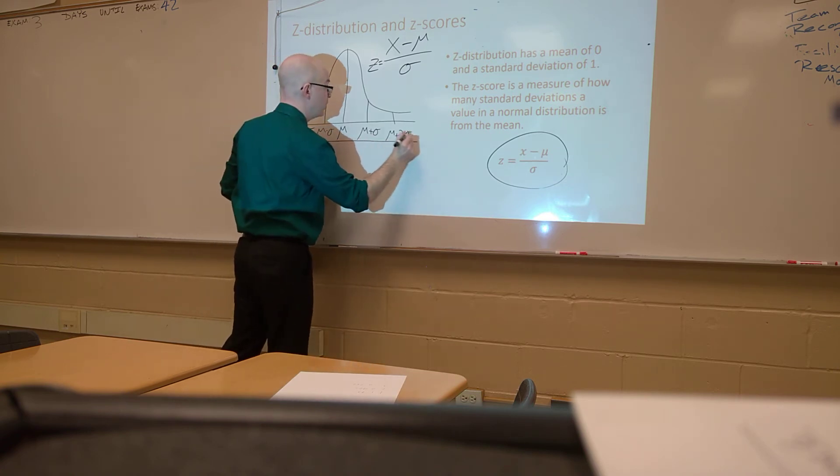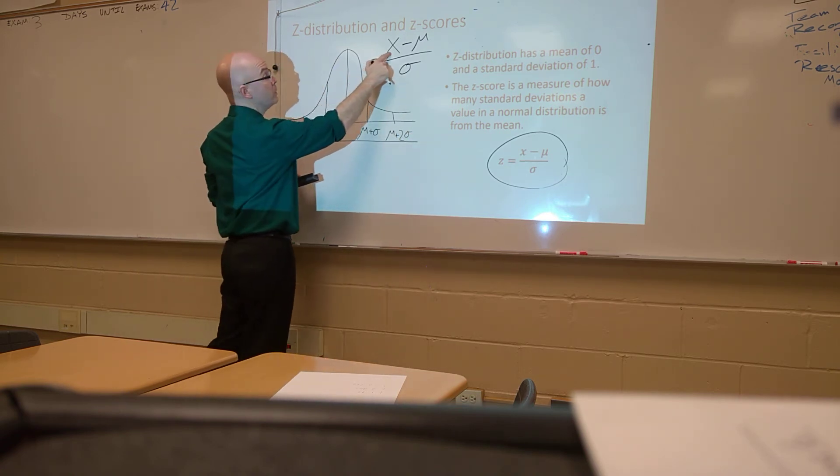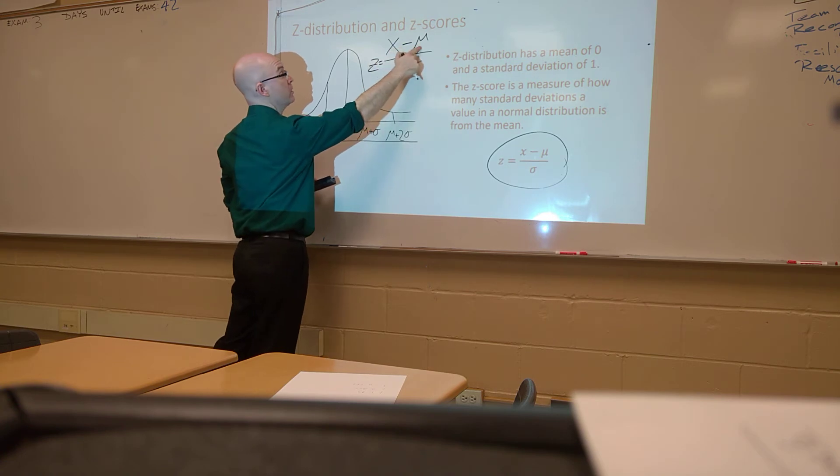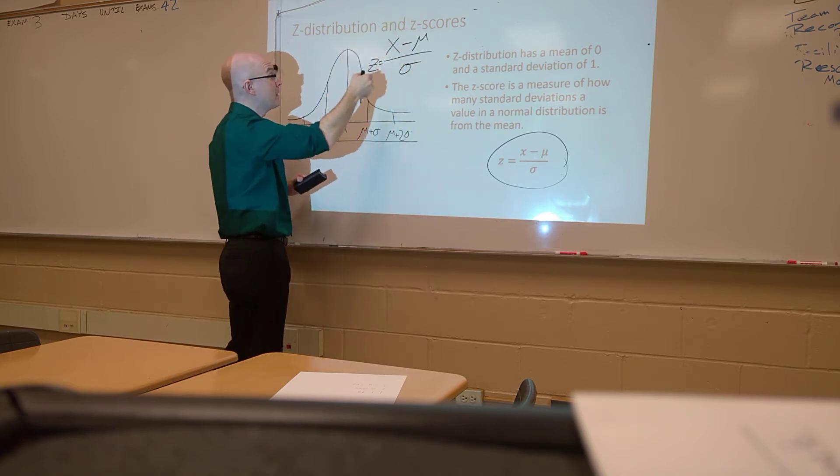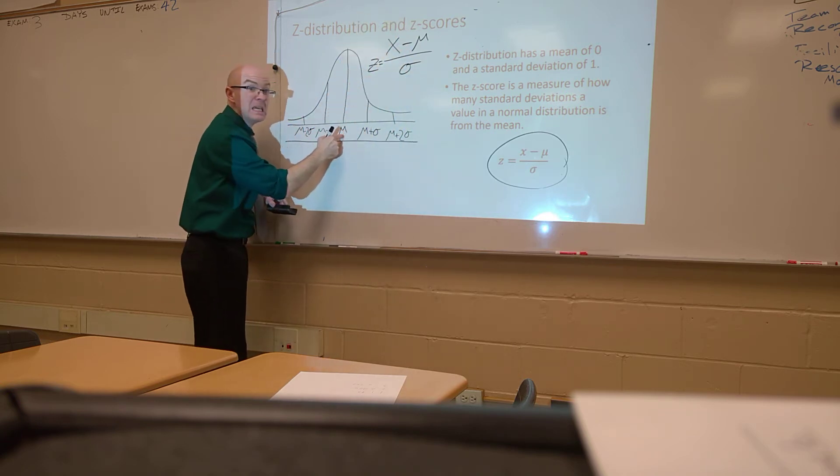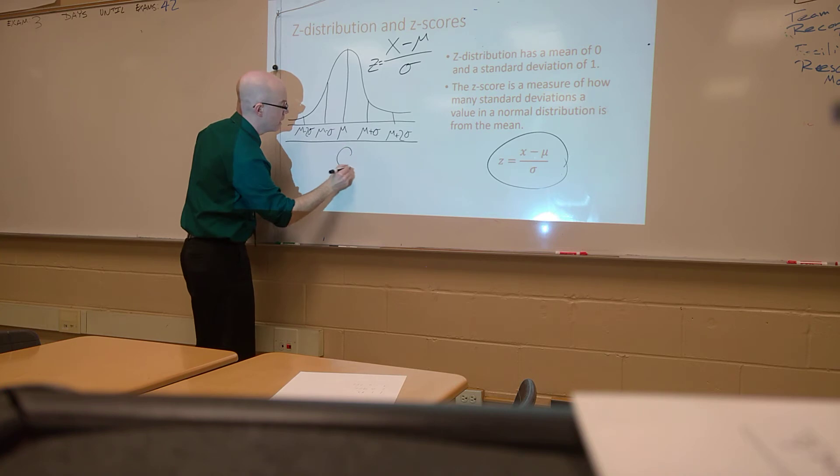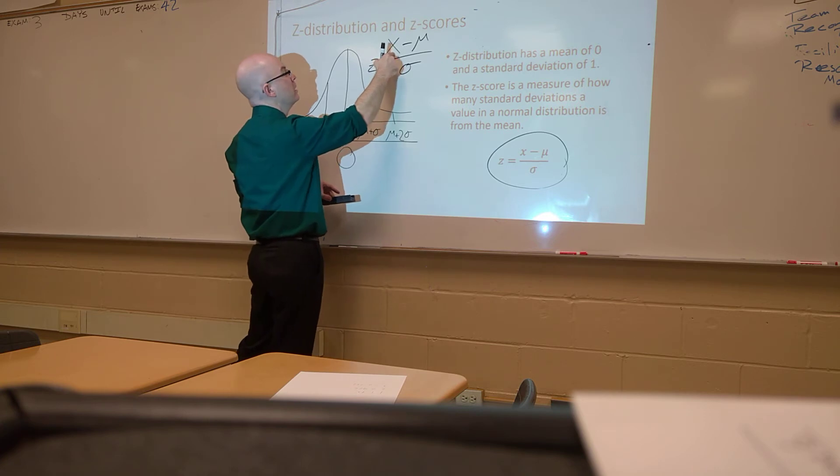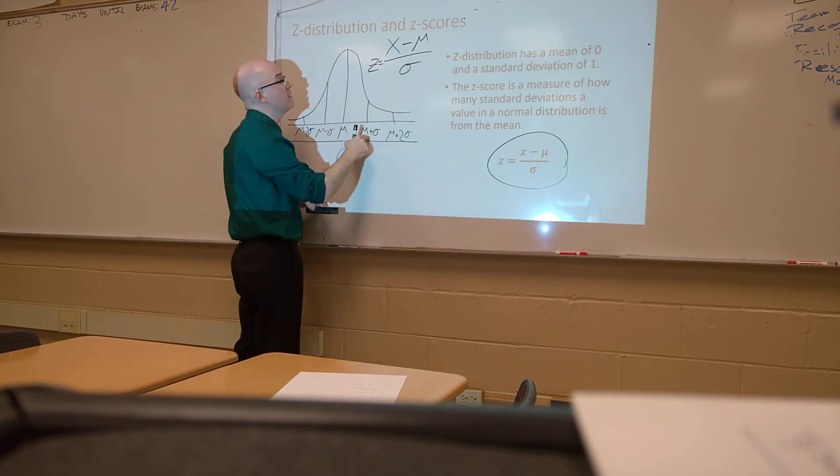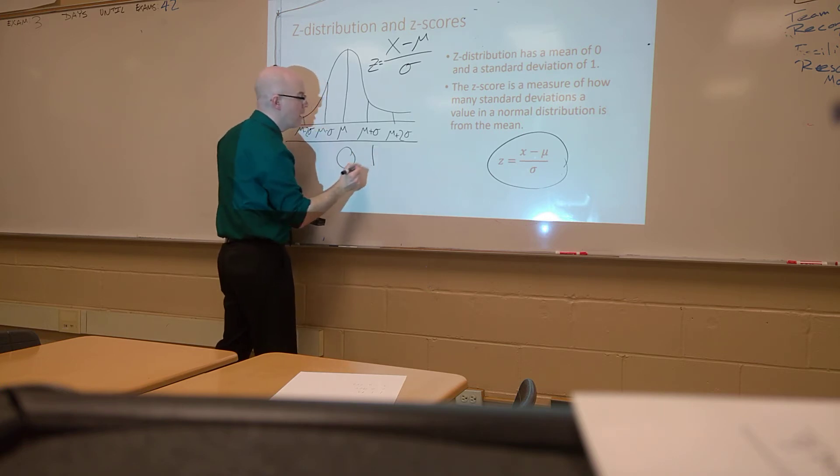What does that do to this? Well, if we put the z-score for each one of these down here, if you take a value, let's take mu. Mu, put it in for x, minus mu is 0. 0 divided by anything is going to be 0. That means your z-distribution, your mean, is always 0.